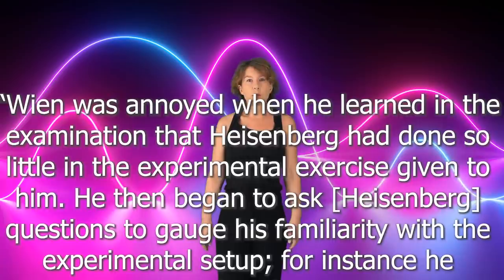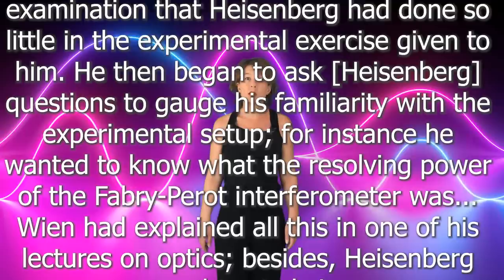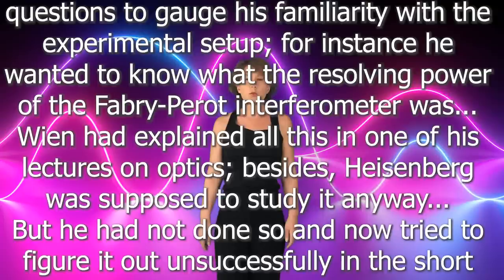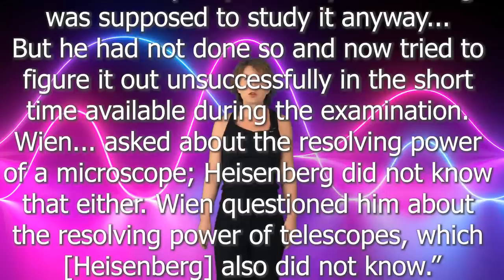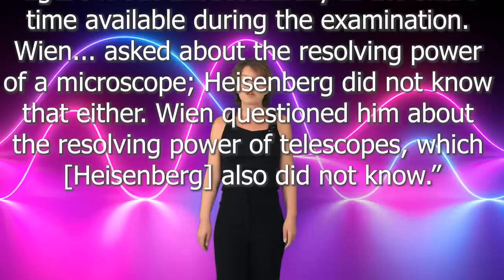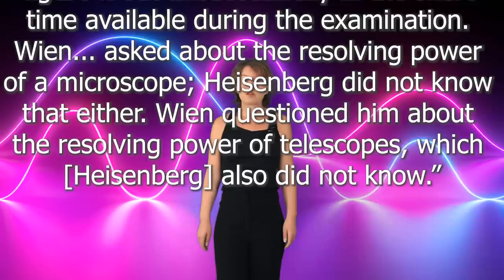He then began to ask Heisenberg questions to gauge his familiarity with the experimental setup. For instance, he wanted to know what the resolving power of the Fabri Perot interferometer was. Wien had explained all this in one of his lectures on optics, besides, Heisenberg was supposed to study it anyway. But he had not done so and now tried to figure it out unsuccessfully in the short time available during the examination. Wien asked about the resolving power of a microscope, Heisenberg did not know that either. Wien questioned him about the resolving power of telescopes, which Heisenberg also did not know.